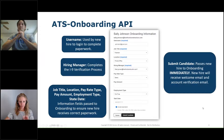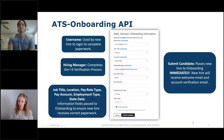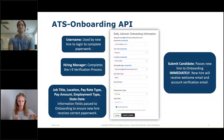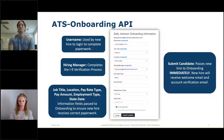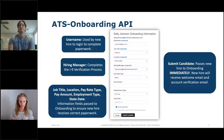It's not just clicking the arrow — it takes us to a screen still within the applicant tracking system showing all the info we're going to pass over into onboarding: username, which they'll use to log in; the hiring manager, who completes the I-9 verification; job title; location; salary; and other fields. Job title and location are especially important because they can control what new hire packet or paperwork this employee receives.